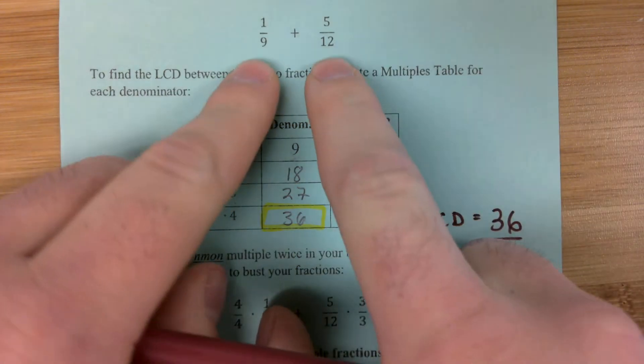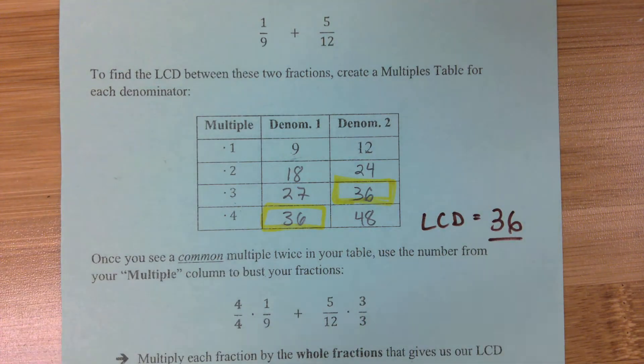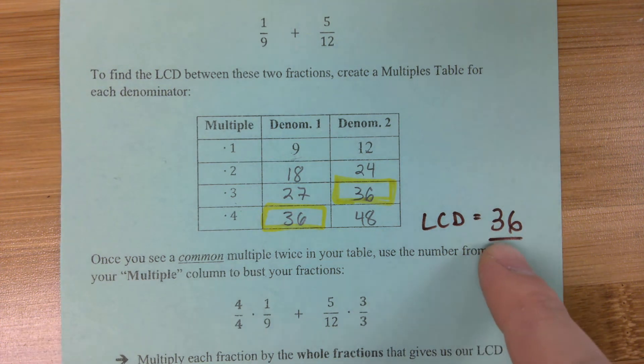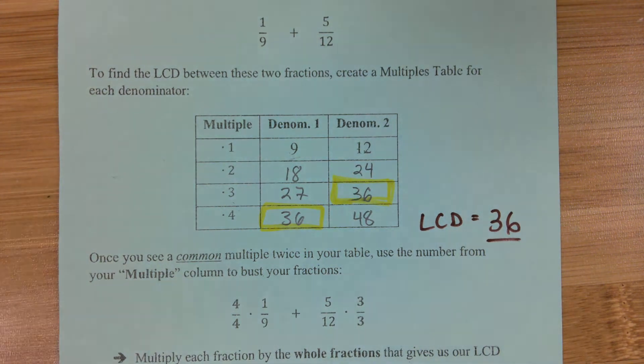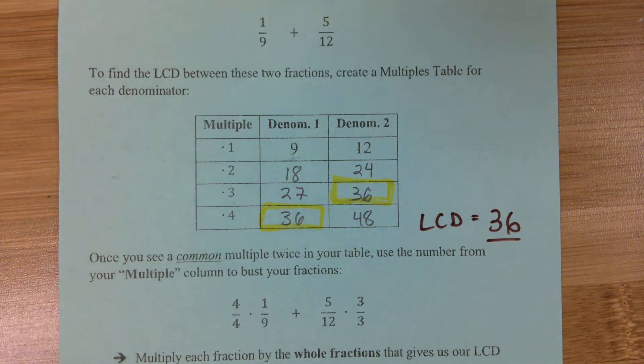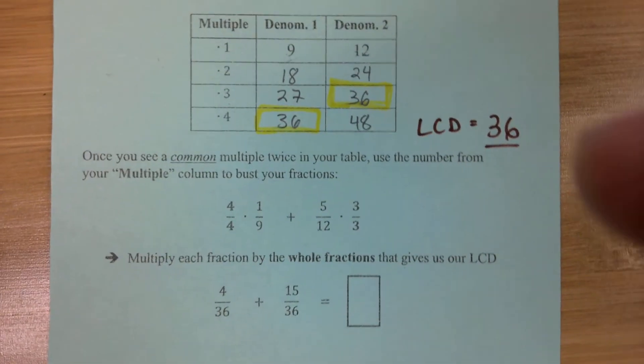If we want these two fractions to have the same denominator, the denominator that we want to see here is 36. Now, we just have to figure out how we're going to inflate these fractions or make these fractions appear larger so that they have a denominator of 36. It's really simple to do that. We just use our multiples table.